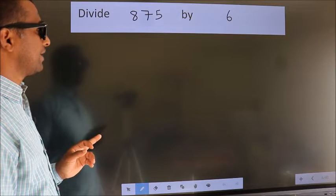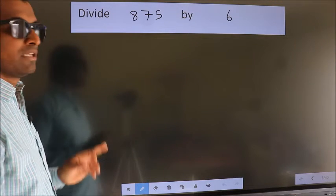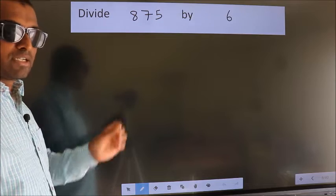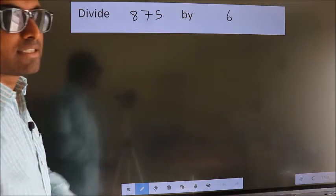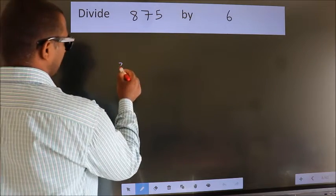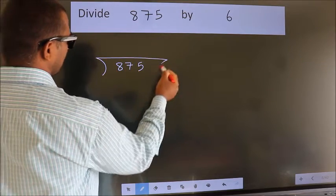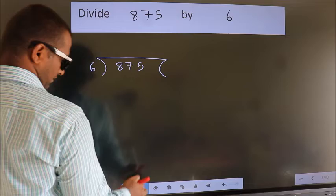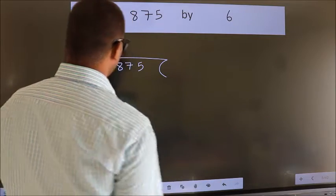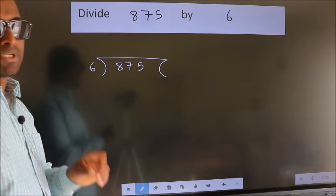Divide 875 by 6. To do this division, we should frame it in this way. 875 here, 6 here. This is your step 1.